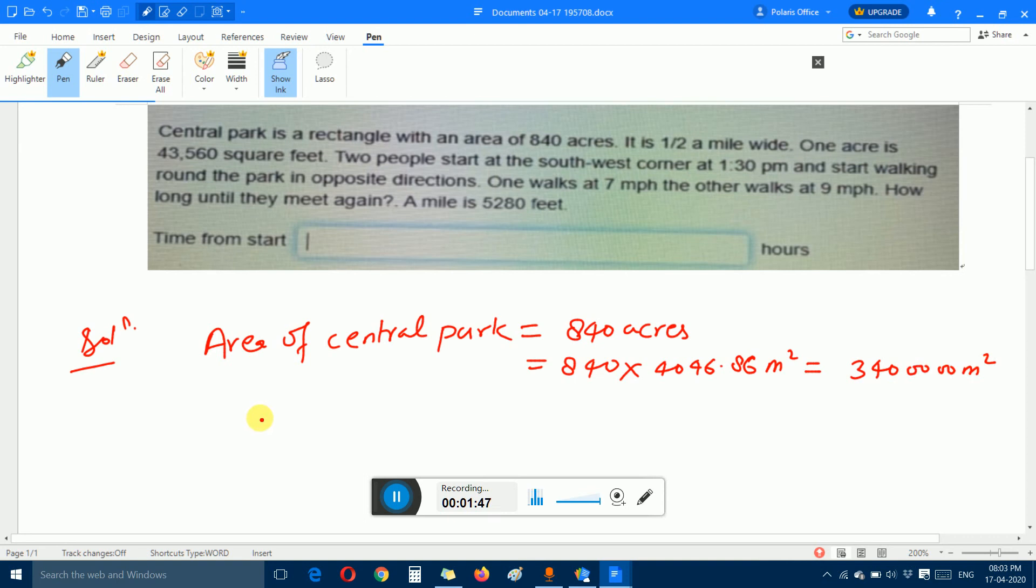Since we know the width of the park is 1/2 mile, the width equals 1/2 times 1609.34. After multiplying, we get 800 meters.